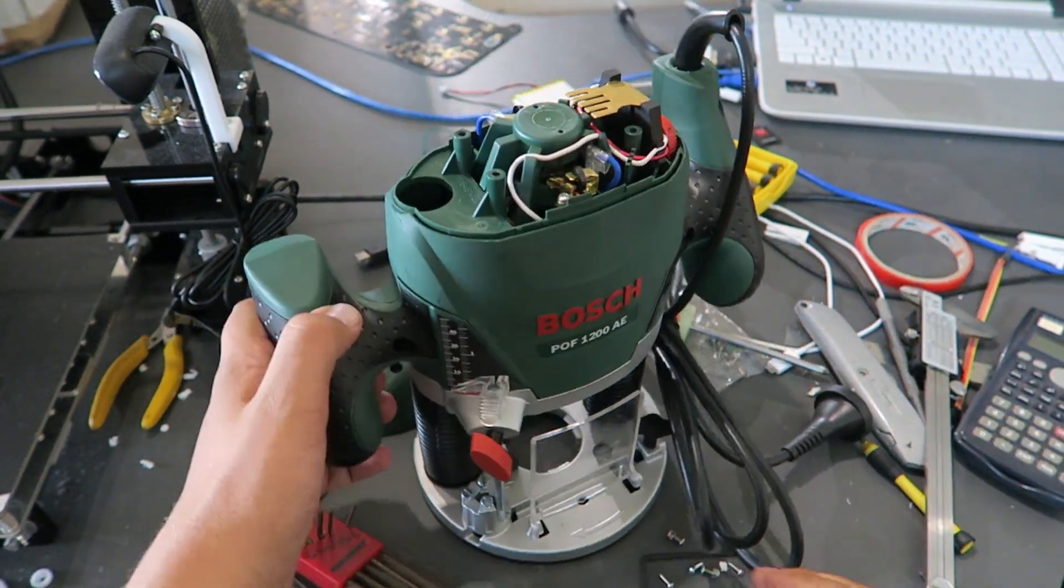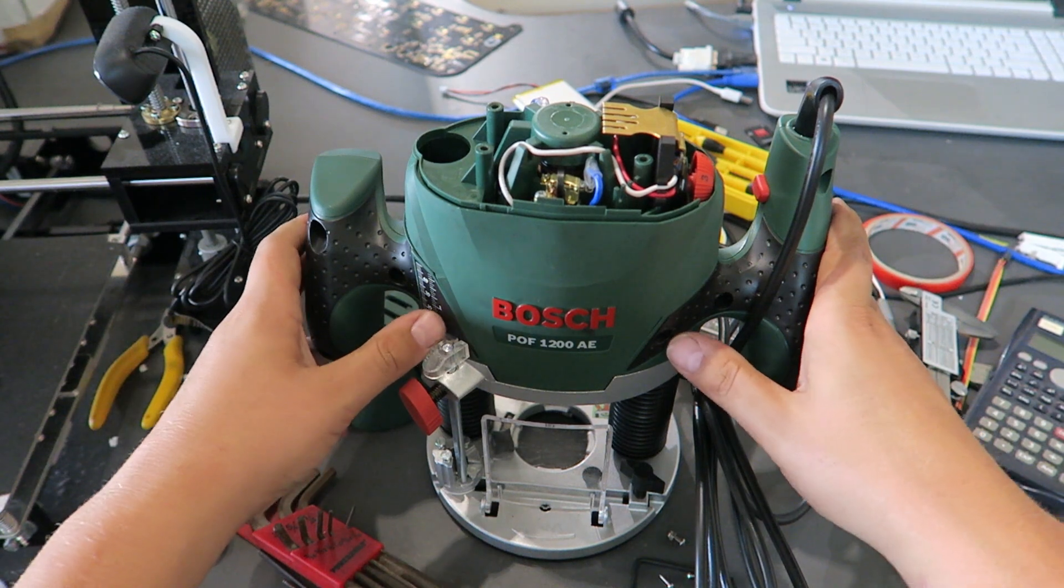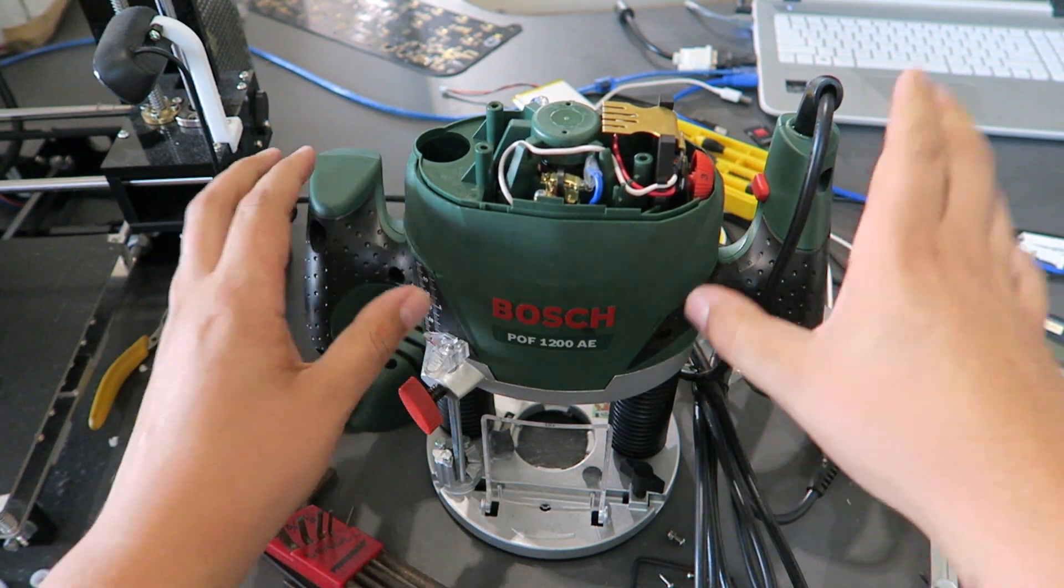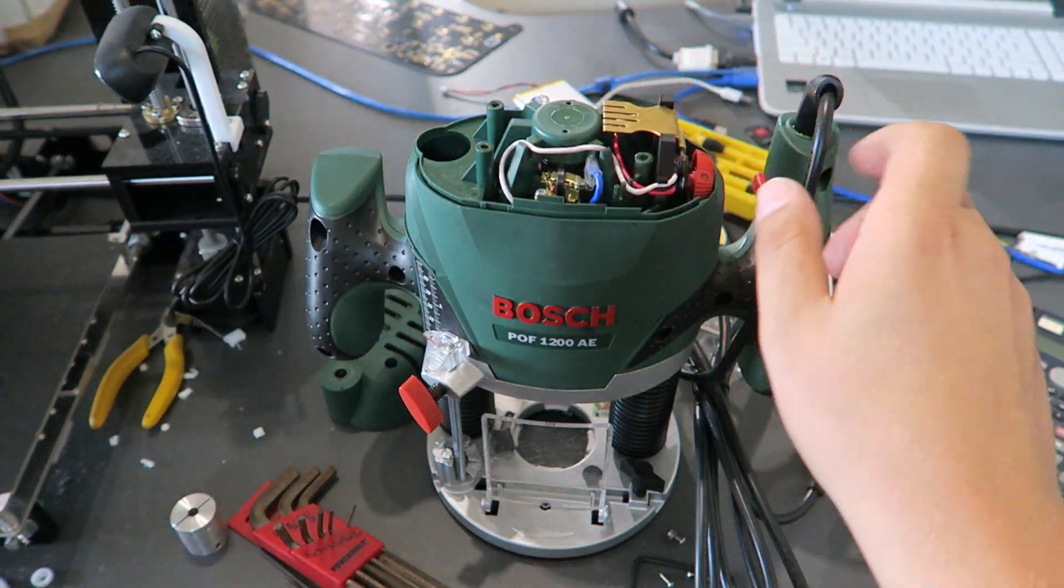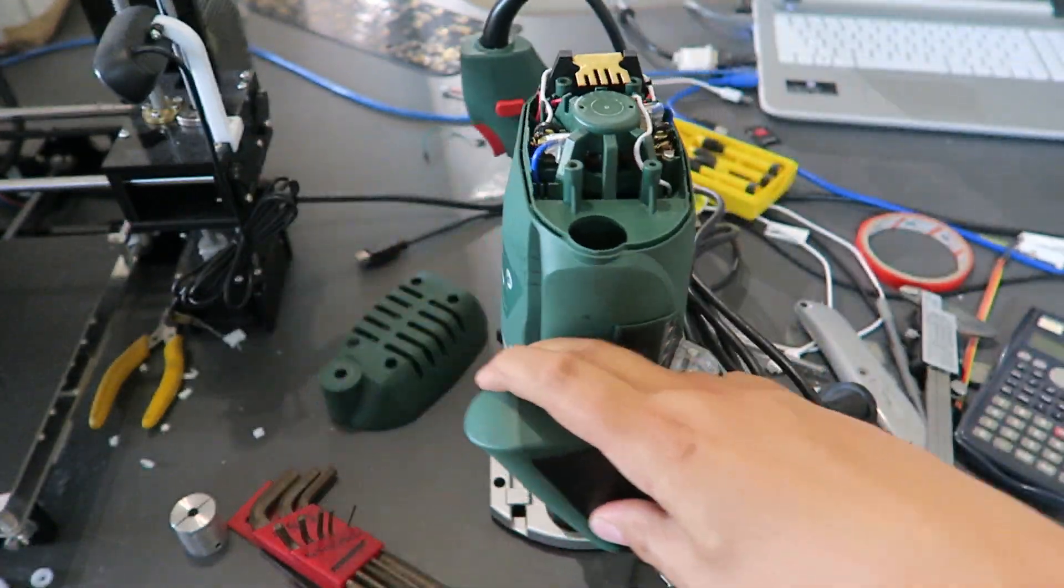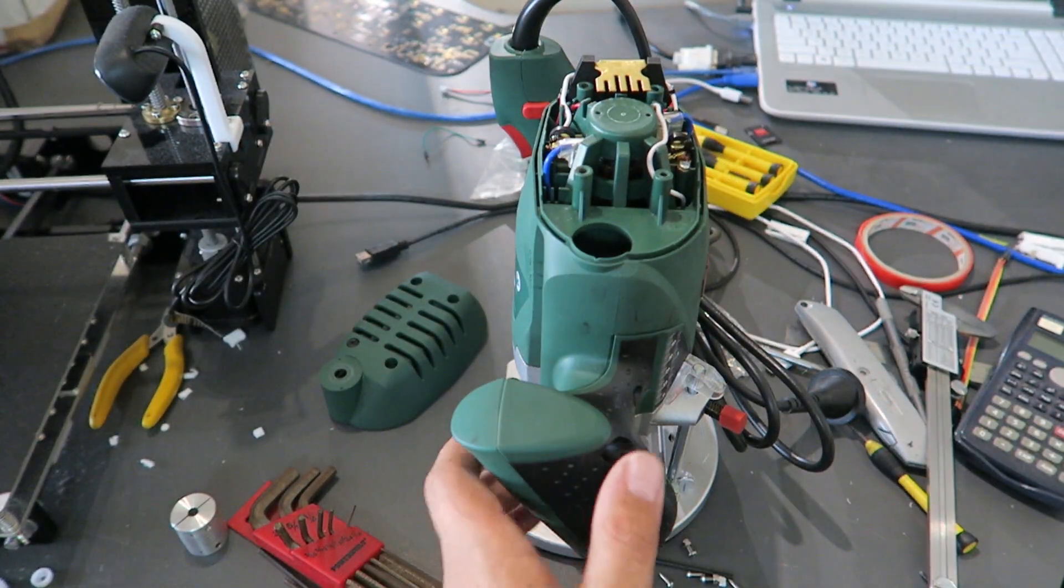So what I've done is started off by removing a couple of screws back here, and then the top of the body pops off. You can remove all of the height adjust gear that's in here because you don't need that anymore.